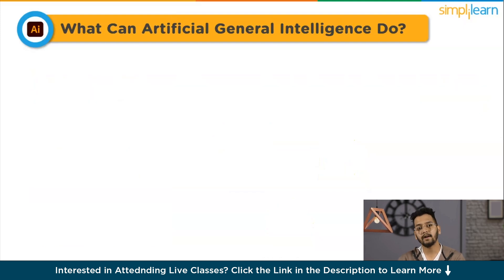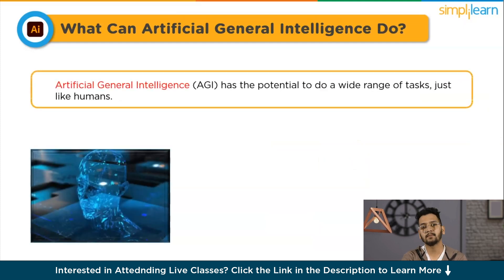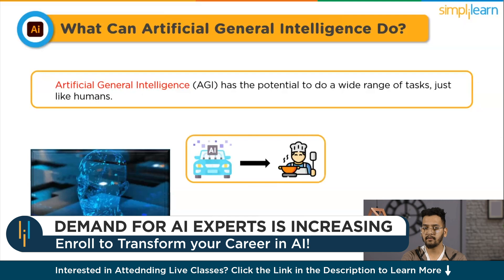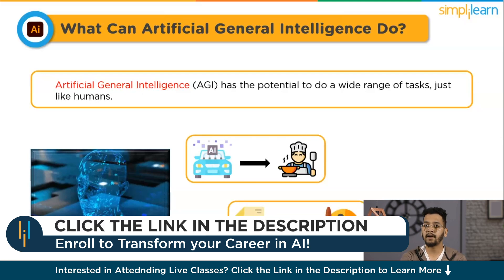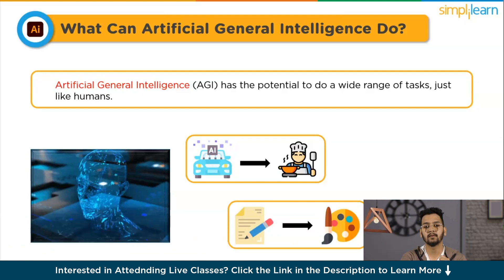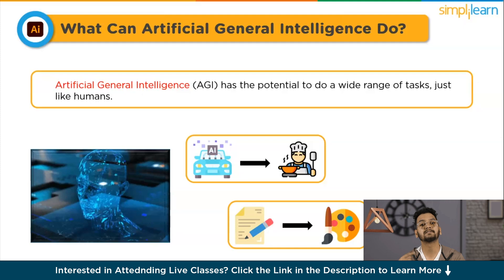What can Artificial General Intelligence do? AGI has the potential to perform a wide range of tasks, just like humans. It can learn new things on its own, understand complex problems, and adapt to different situations. For example, it could help with various jobs — from driving cars to cooking, and even creative tasks like writing or painting. AGI might make our lives easier by handling everyday challenges and finding solutions to our problems. However, it is important to note that AGI is still a theoretical concept.